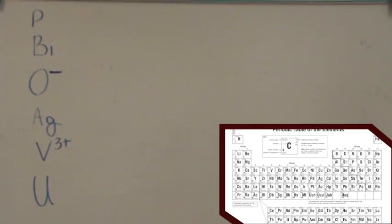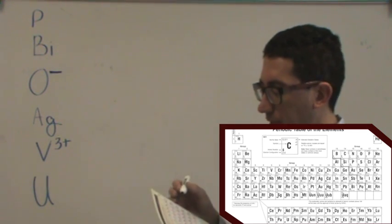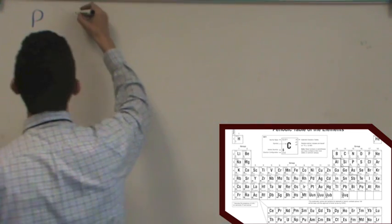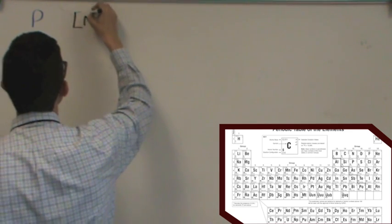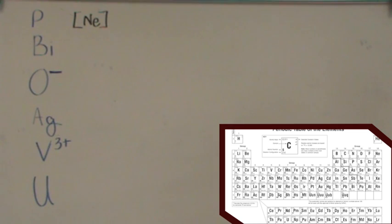All right, let's give these a try. Phosphorus. Well, I want to look first at the previous noble gas. That's number 10, neon. Follow along in your own periodic table. Then you go to the next level, the sodium-magnesium level. That's the 3S.